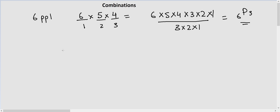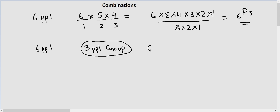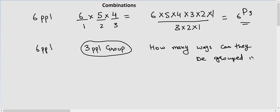Now what happens with combinations? In combination, we are not trying to have them sit on a chair — we are just looking at how many ways six people can be placed in a group of three. So basically, how many ways can they be grouped in groups of three?